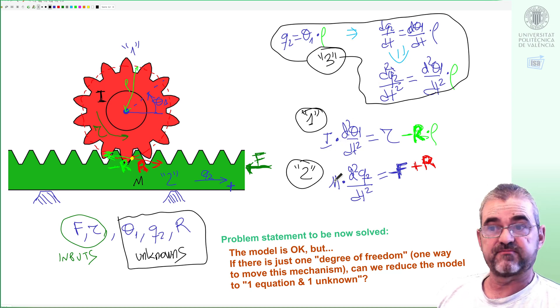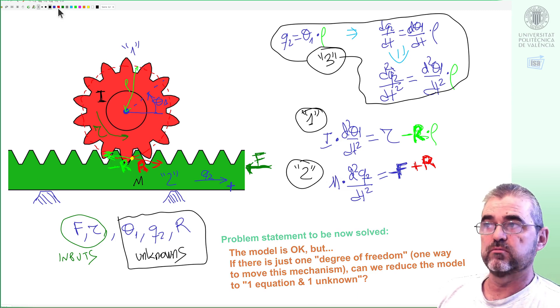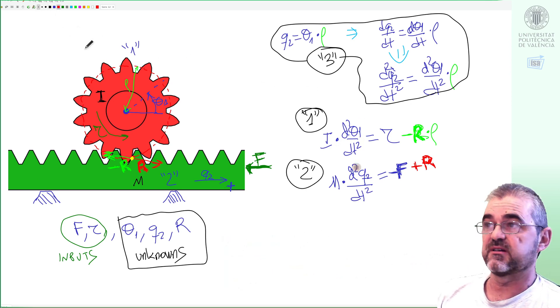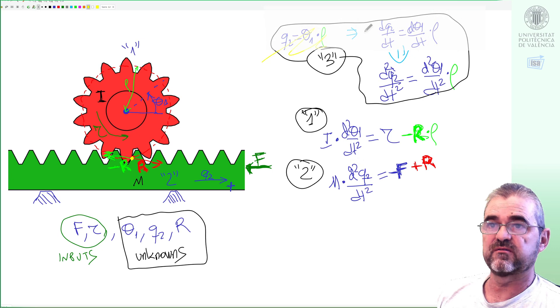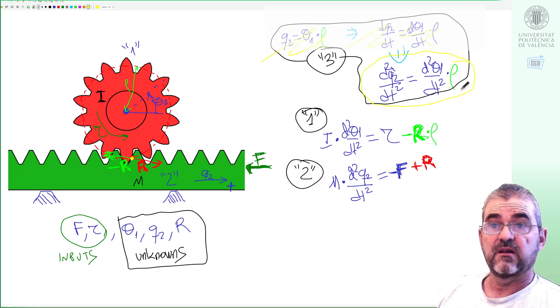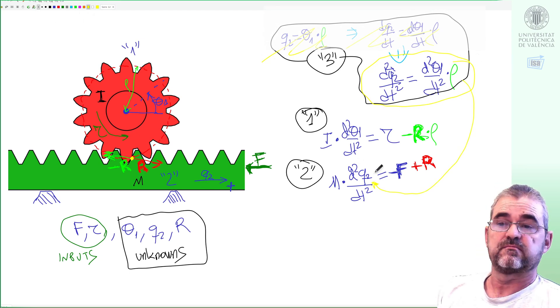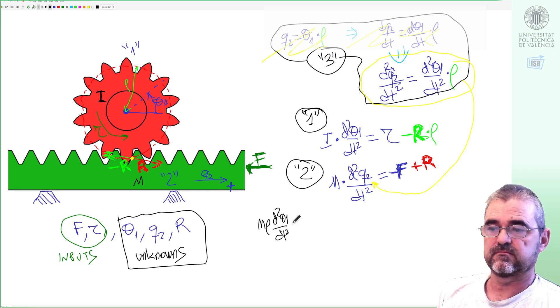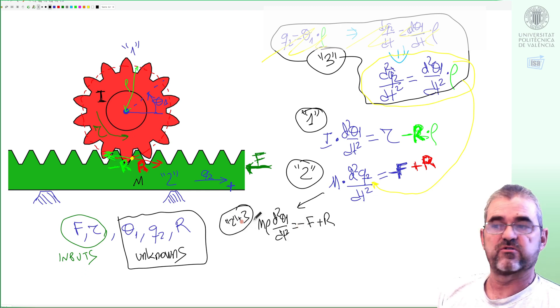Let's manipulate it then. We will first try to eliminate q2 and R. As only accelerations appear here we will use this version of equation three, and I will use that to replace this acceleration by rho times acceleration one.